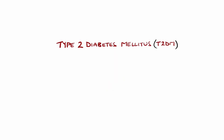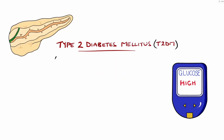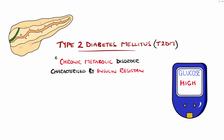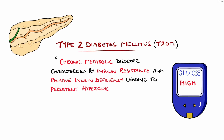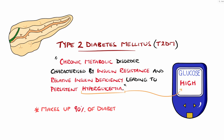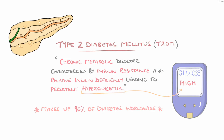Type 2 diabetes mellitus is a chronic metabolic disorder characterized by insulin resistance and relative insulin deficiency, leading to persistent hyperglycemia, meaning elevated levels of glucose in the blood. It constitutes approximately 90% of all diabetes cases worldwide, making it the most common form.